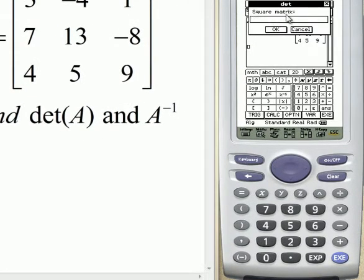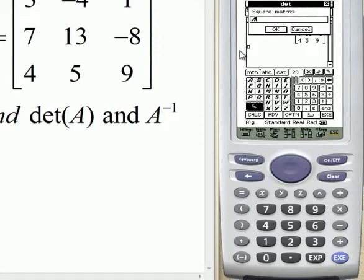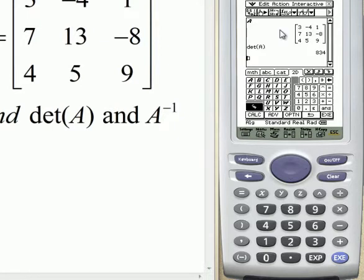Then it'll ask us for what matrix we'd like to use, so we go back to 2D, this tab here, and select A, which is where our matrix is stored, and press OK. And that will give us our number for the determinant.